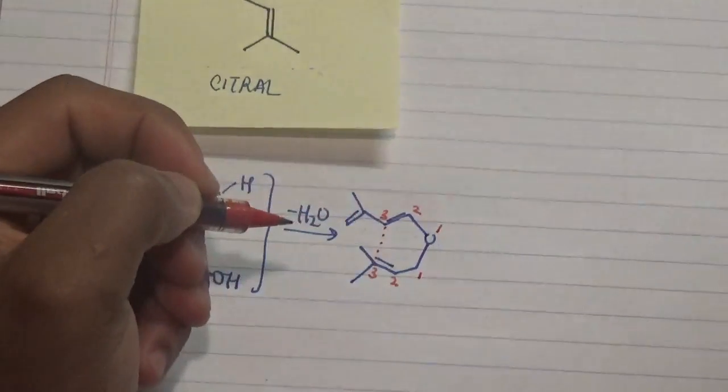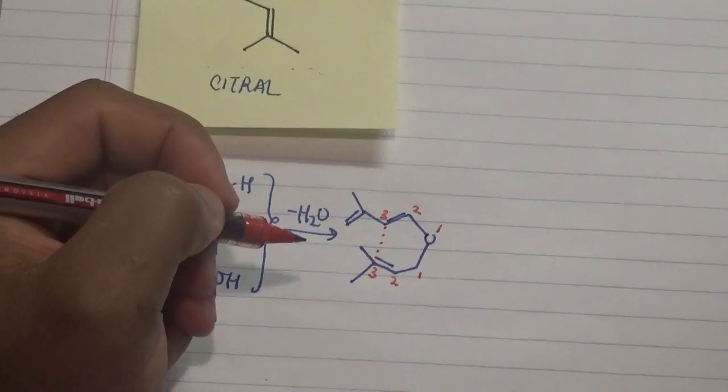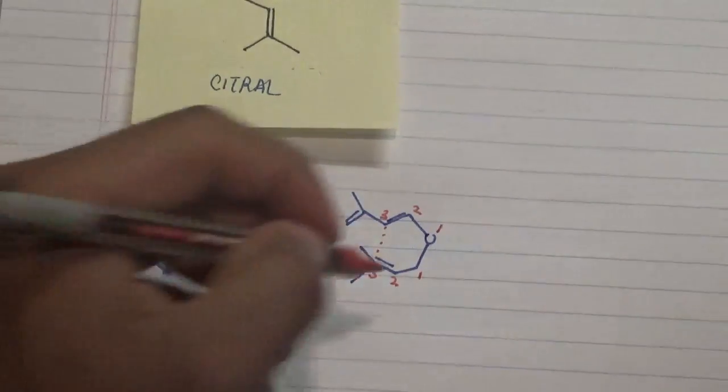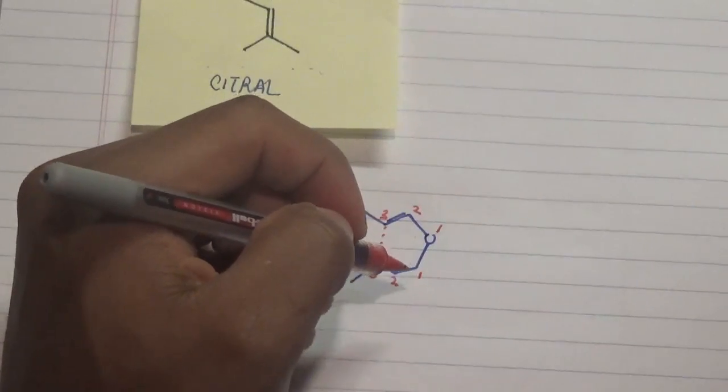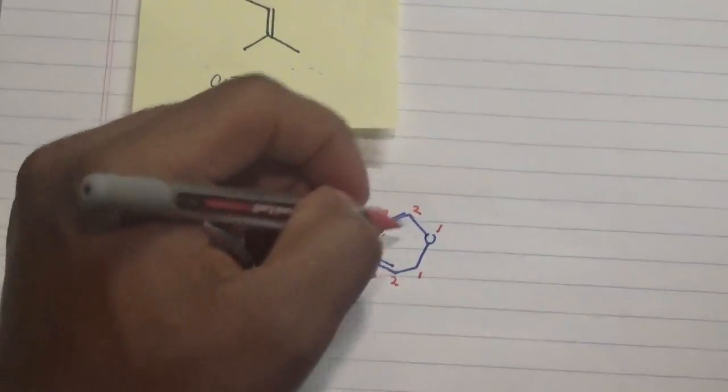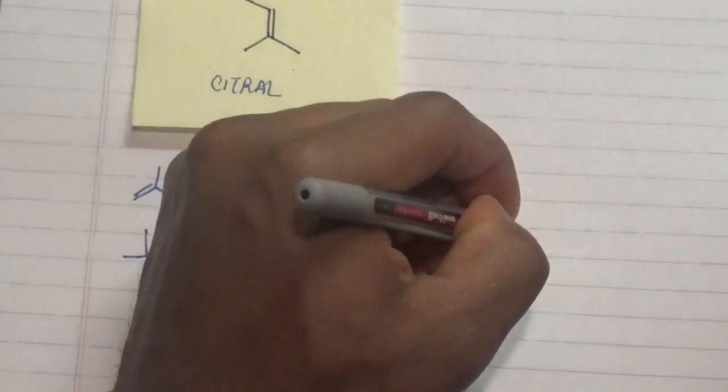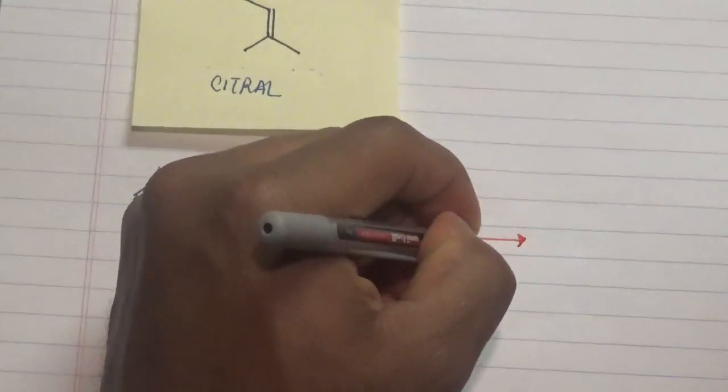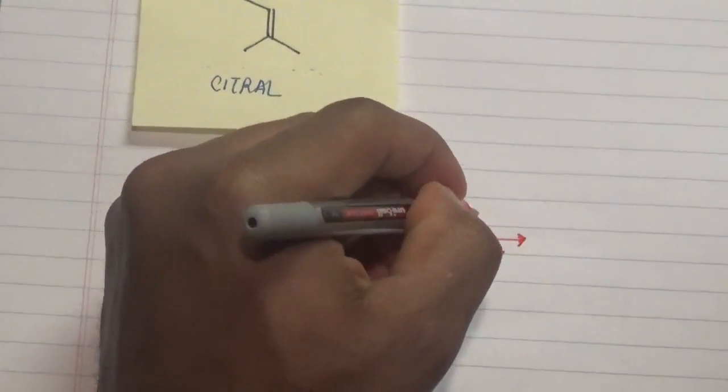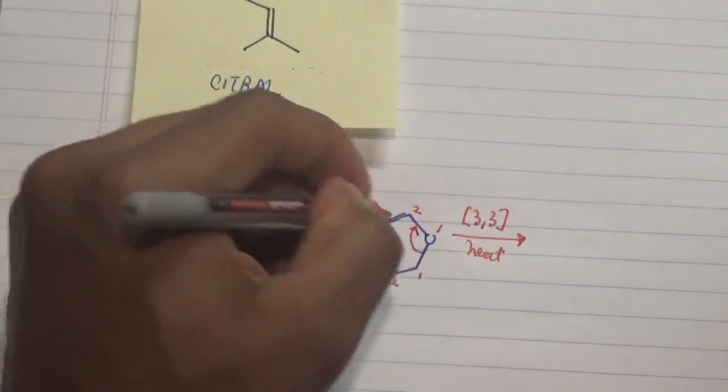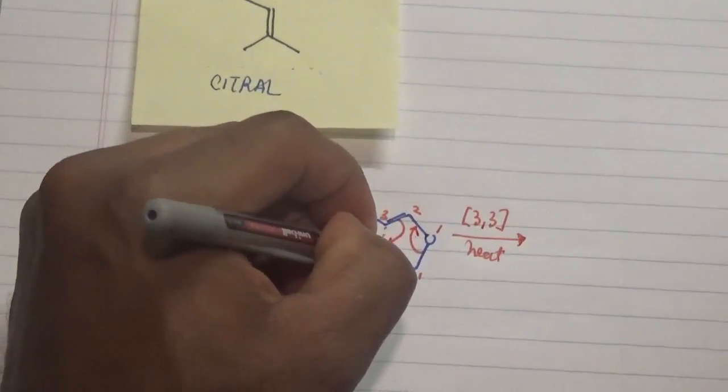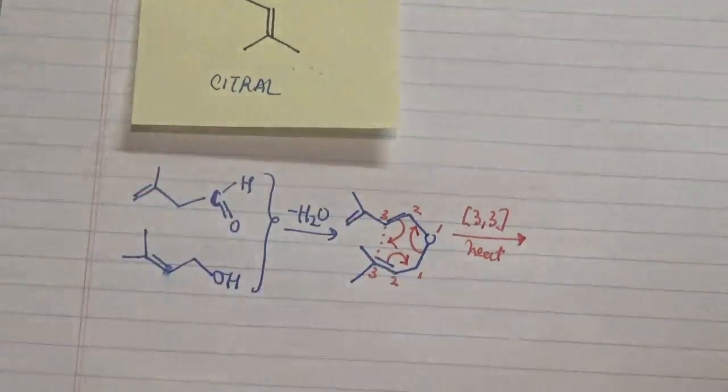Three is the part where we actually make our new sigma bond, and one is the part where we actually lose our sigma bond. So what happens in this case is that in the presence of heat, we have the favoring of a 3x3 sigmatropic reaction.